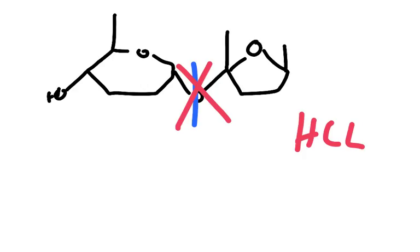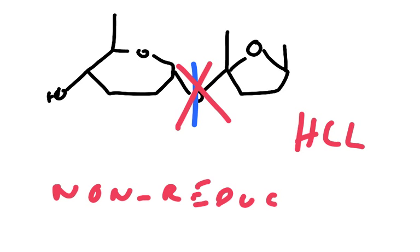And obviously because you've now turned these into two reducing sugars, it will then test positive. So the test for a non-reducing sugar is that if it's a sugar that initially tests negative with Benedict's reagent,